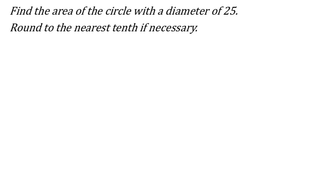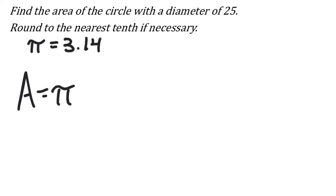Find the area of a circle with a diameter of 25. Round to the nearest tenth if necessary. For the area formula, we use pi — and we'll use 3.14. The area of a circle is pi times the radius squared. Since we're given the diameter, not the radius, we take 25 divided by 2, which is 12.5.